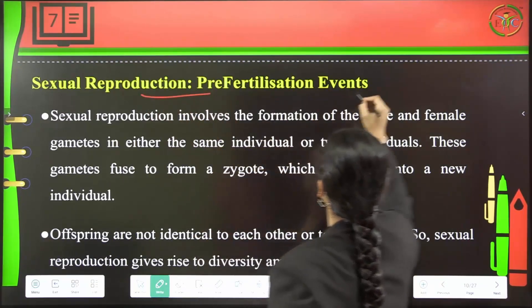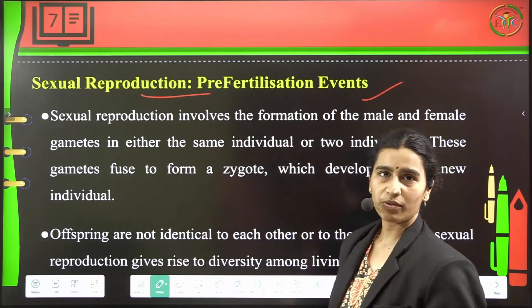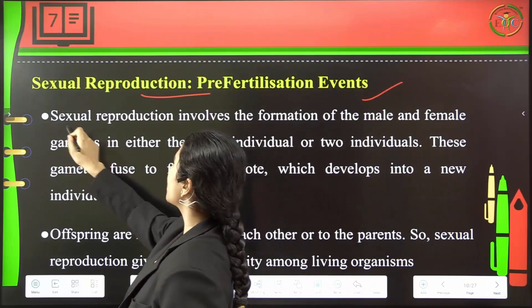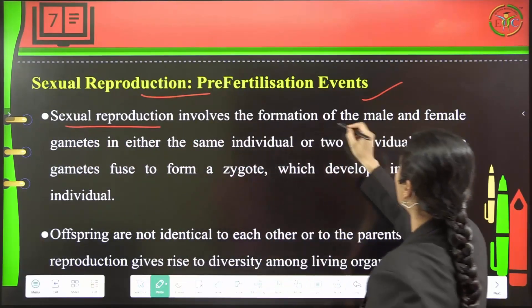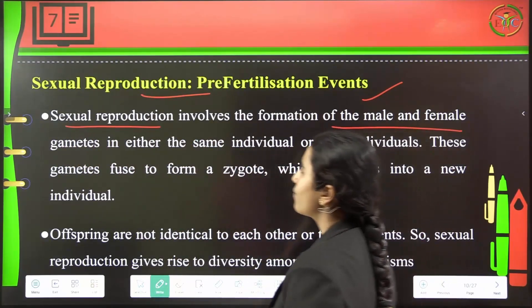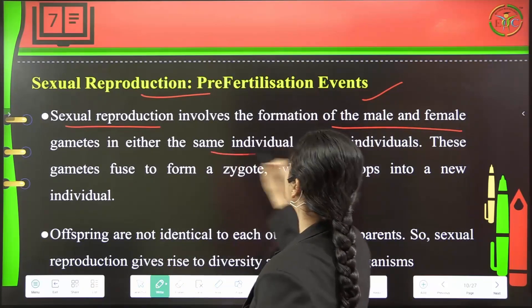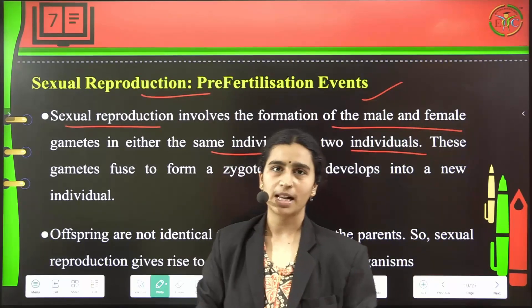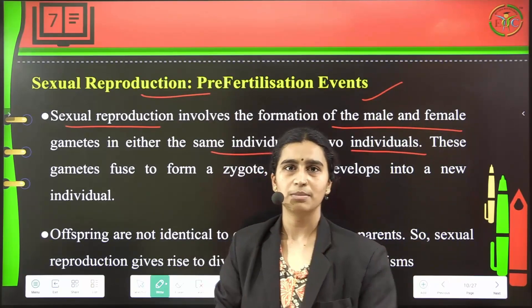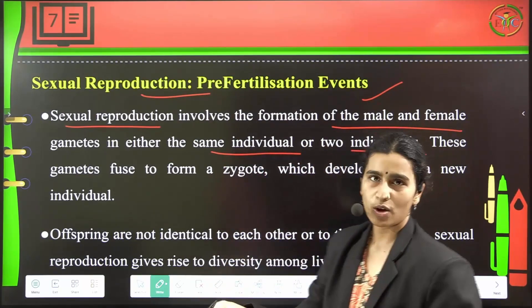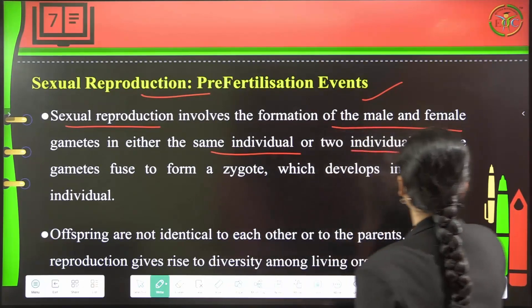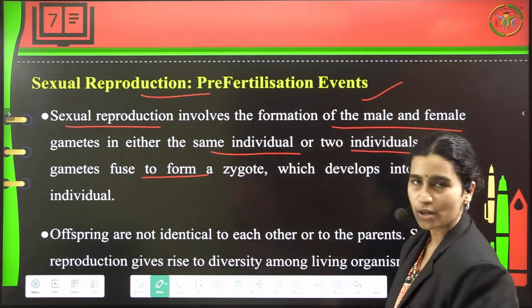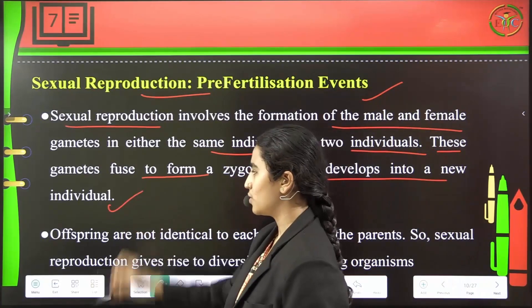Coming to sexual reproduction, which involves three types of events: pre-fertilization, fertilization, and post-fertilization events. Sexual reproduction will involve the formation of male and female gametes in either the same individual or two different individuals. We can see both male and female gametes in one organism itself, or we can see male and female organisms separately. These gametes will fuse or copulate to form a zygote which will develop into a new individual.